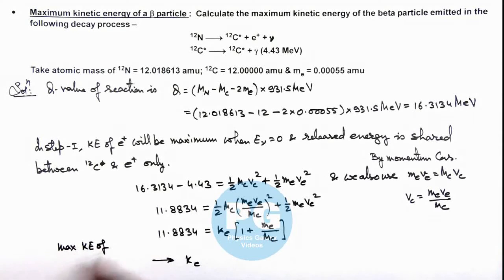It is a positron which is emitted as the beta plus particle. So this KE we can write as 11.8834 multiplied by mc divided by me plus mc.